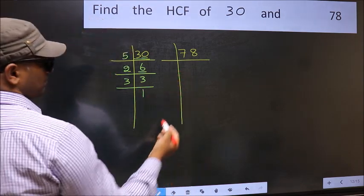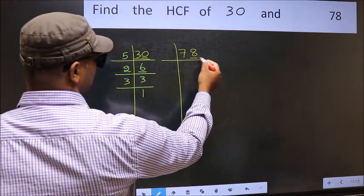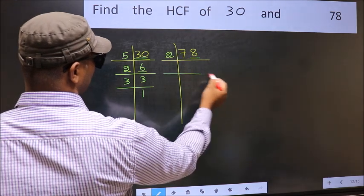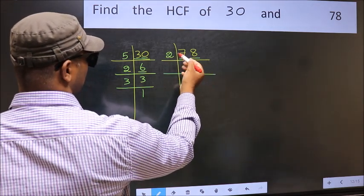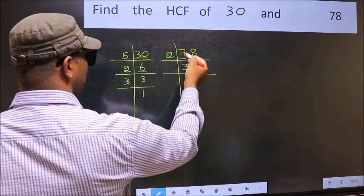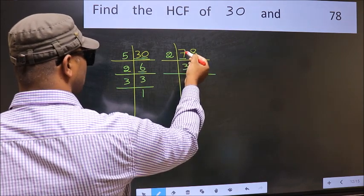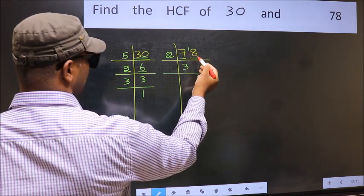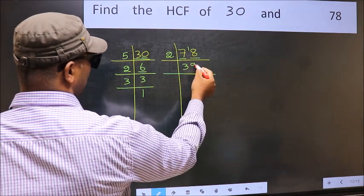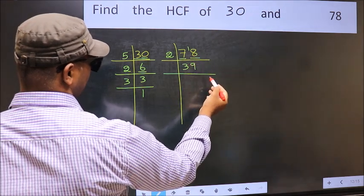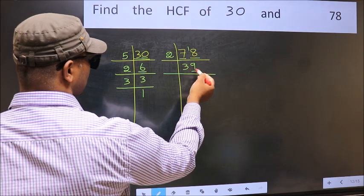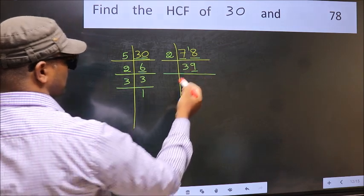Now the other number, 78. Last digit is 8, which is even, so take 2. First number 7 — the closest number to 7 in the 2 table is 6, so 7 minus 6 is 1, carried forward gives 18. When do we get 18 in the 2 table? 2 nines are 18. Now the last digit is 9, which is not even, so not divisible by 2.